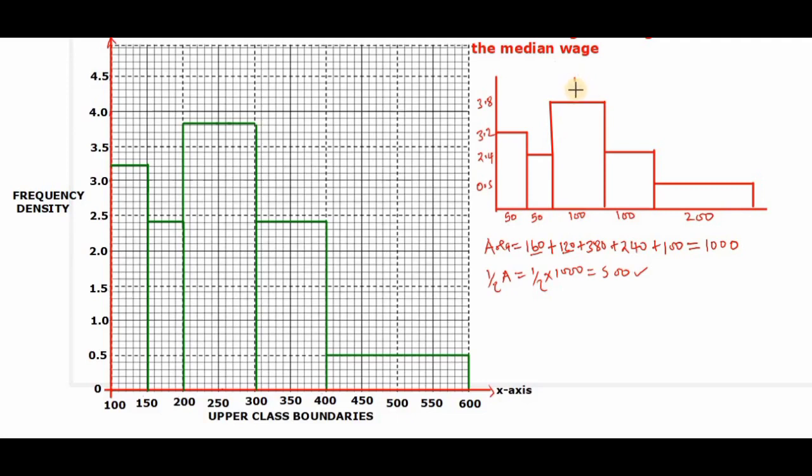So if we have a vertical line somewhere in between, for this particular point we had 200, and this particular point we had 300. That is according to what we have on the histogram.